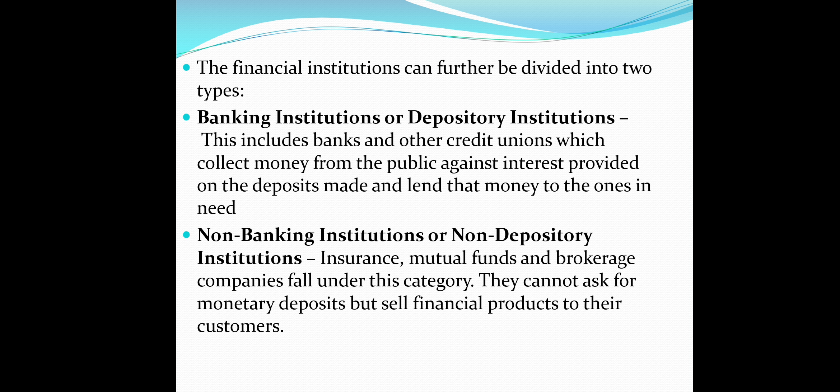Financial institutions can be further divided into two types. First, banking institutions or depository institutions, which include banks and credit unions that collect money from the public against interest provided on deposits and lend that money to those in need. Second, non-banking institutions or non-depository institutions, such as insurance companies, mutual funds, or brokerage companies, which cannot accept monetary deposits but sell financial products to customers.